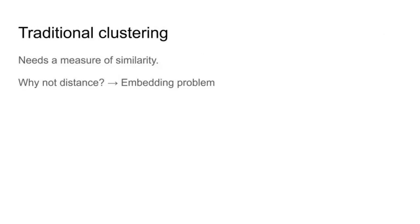You might ask: why not just perform traditional clustering on the nodes of the network? Well, you would start by needing to define a measure of similarity between nodes. Why not just use distance as in usual clustering? The thing is, to embed nodes in a multidimensional space while preserving all pairwise distances, in theory you would need as many dimensions as you have data points. And performing clustering in very high-dimensional data is always going to be a problem. So traditional clustering is very ill-posed for this kind of network.